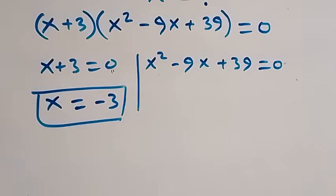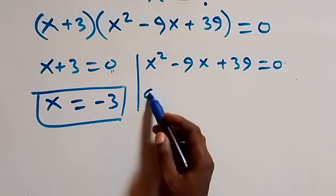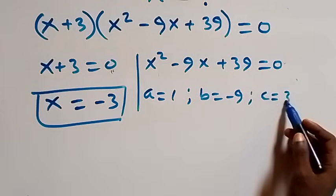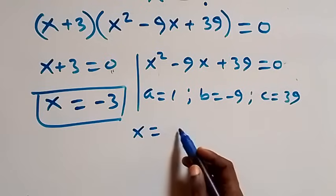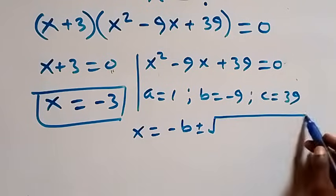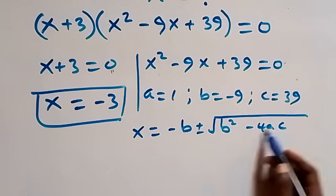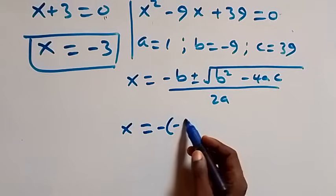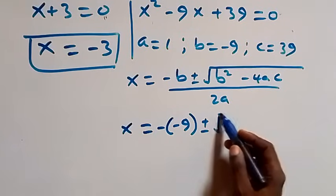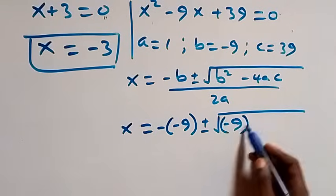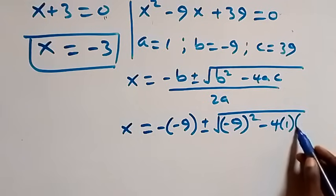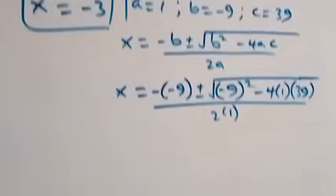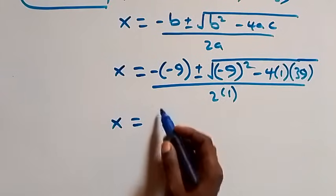From the quadratic x squared minus 9x plus 39 equals 0, we identify a equals 1, b equals minus 9, and c equals 39. Applying the quadratic formula, x equals minus b plus or minus square root of b squared minus 4ac, over 2a. This becomes x equals 9 plus or minus square root of 81 minus 4 times 1 times 39, over 2.